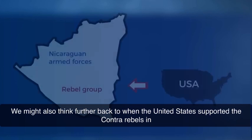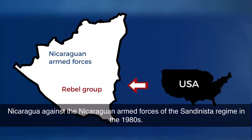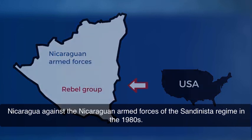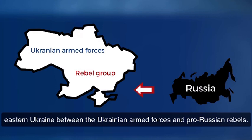We might also think further back to when the United States supported the Contra rebels in Nicaragua against the Nicaraguan armed forces of the Sandinista regime in the 1980s. Or we can consider the possible involvement of Russia in the conflict in eastern Ukraine between the Ukrainian armed forces and pro-Russian rebels.